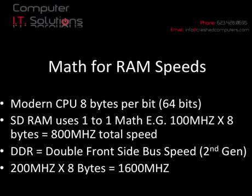We can think about how it all started. Modern CPUs use eight pipes per bit, giving you about 64 bits. SDRAM was really your first generation of random access memory used in a computer, and the math on that was a one-to-one ratio. So if you had a 100 MHz memory module, you'd multiply that times eight bytes, giving you a total of 800 MHz speed for that RAM. As generations progressed, the front bus speed doubled, so you'd have 200 MHz — and 200 MHz times eight bytes gives you 1,600 MHz speed. This trend continued.